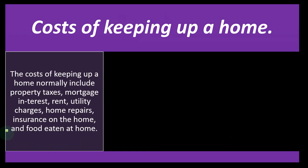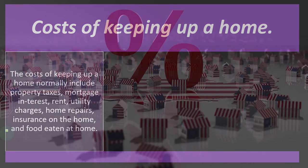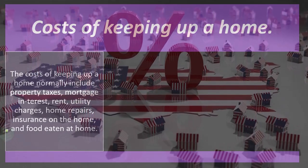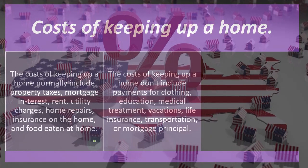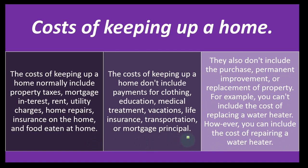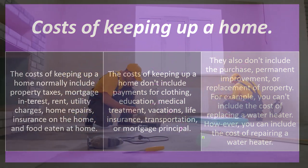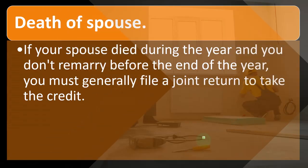The cost of keeping up a home normally includes property taxes, mortgage interest, rent, utility charges, home repairs, insurance on the home, and food eaten at home. The cost of keeping up a home doesn't include payments for clothing, education, medical treatment, vacations, life insurance, transportation, or mortgage principal. They also don't include the purchase, permanent improvement, or replacement of property — for example, you can't include the cost of replacing a water heater. However, you can include the cost of repairing a water heater.